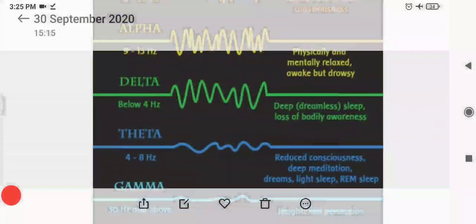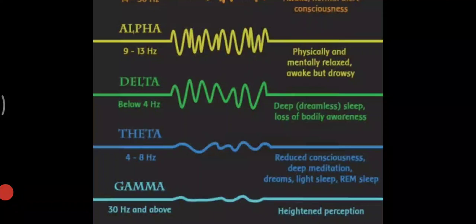The theta frequency range is 4 to 7.5 or 8 hertz, occurring most often in sleep but also dominant in deep meditation. Theta is our gateway to learning, memory, and intuition. In theta, our senses are withdrawn from the external world and focused on signals originating from within.